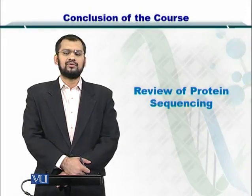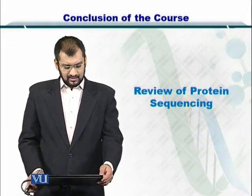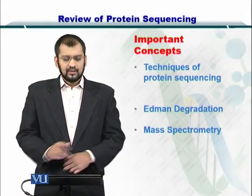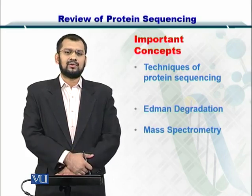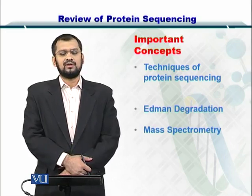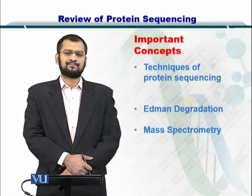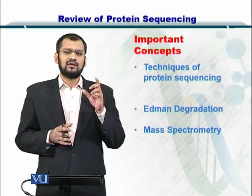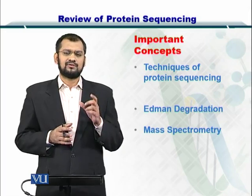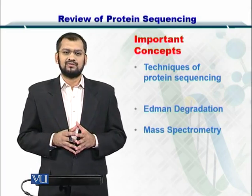Dear students, in this module I'm going to review with you the protein sequencing chapter. You know that the two techniques commonly employed in protein sequencing include Edman degradation and mass spectrometry. Edman degradation was useful for sequencing smaller proteins, such as proteins with about 40 or 50 amino acids.